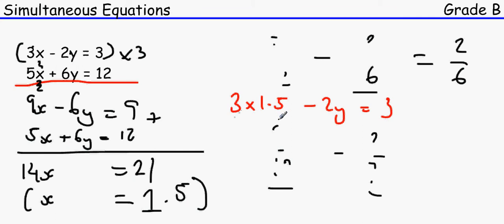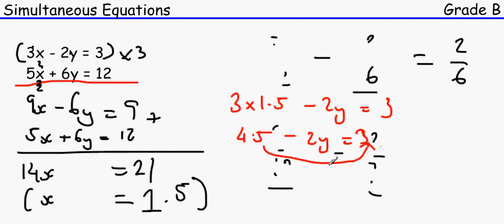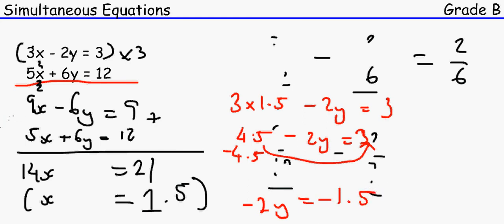Moving 4.5 to the other side gives minus 2y equals minus 1.5. Dividing both sides by 2 gives minus y equals minus 0.75.